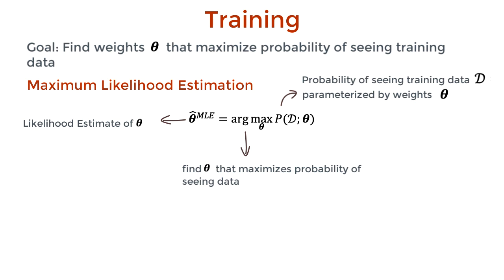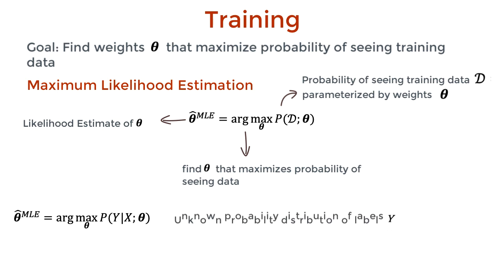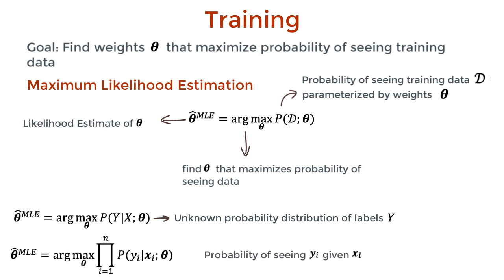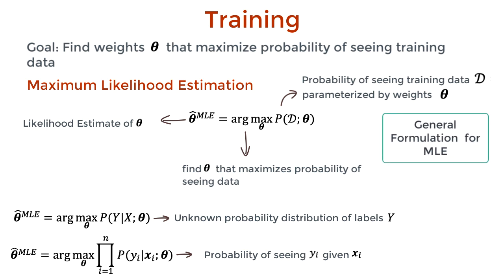In place of the dataset D, we can write y given x — as in training, we want to maximize the probability of the specific labels y given the specific features x. This p of y given x parameterized by theta is some unknown probability distribution that the values y can take given some x. This is the same as maximizing the product of the probabilities of seeing every training label y_i given its corresponding x_i. This big pi symbol is product, similar to sigma for sum. So far, this is the general formulation for maximum likelihood estimation in the supervised learning training phase.